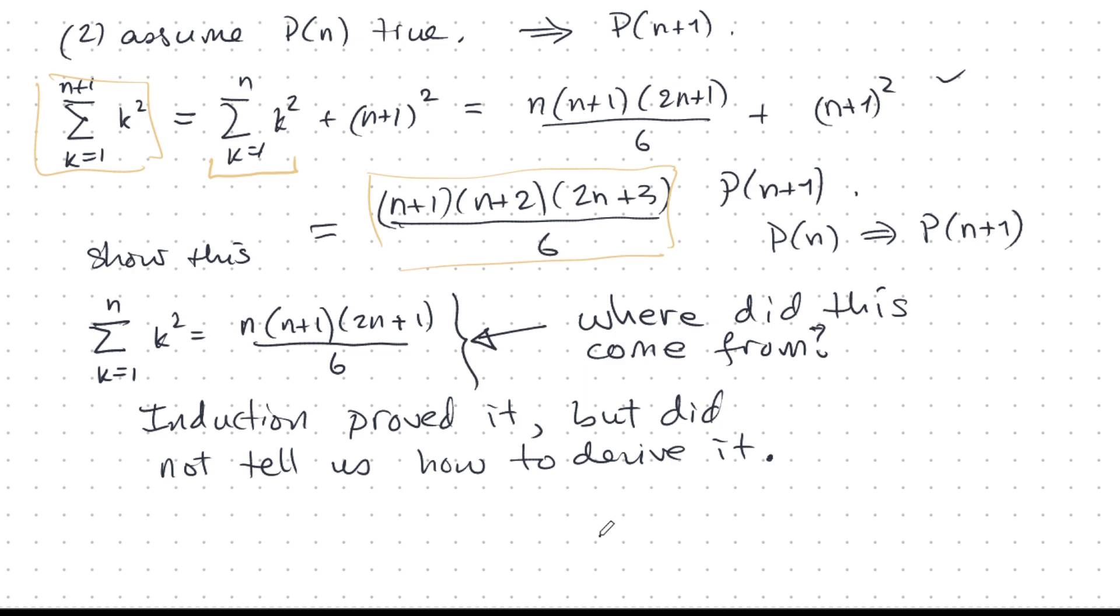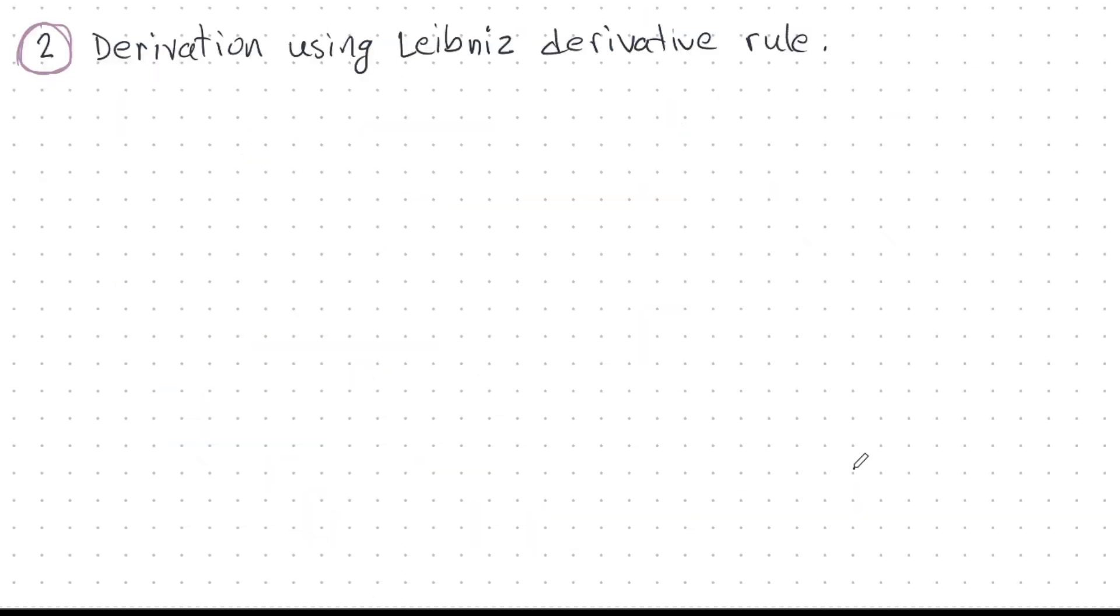Well, induction doesn't tell you. And this is one of the sort of weaknesses of induction. It's a very powerful tool, but it has some limitations. And sometimes it doesn't tell you where this true formula comes from that you're trying to prove. So in this video, we're going to actually do a constructive proof. I'm sure there are plenty of ways to prove that sum of squares formula.